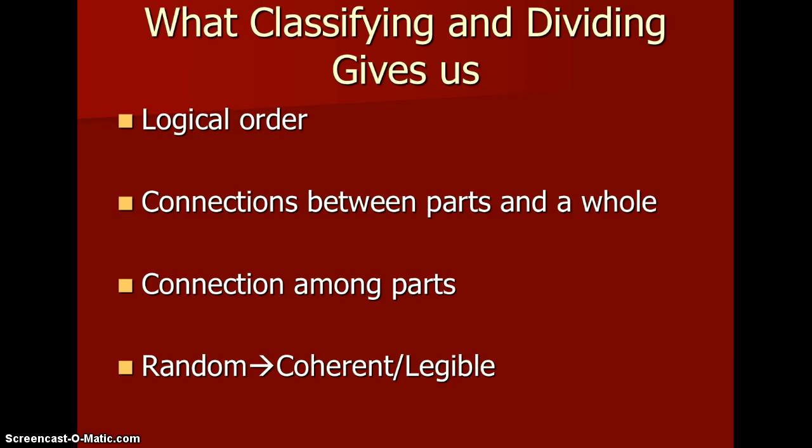When we look at information in terms of categories and sorting, we get logical order. Think if a grocery store just put things on the shelf in the order they came off the truck — you'd never be able to find anything. Classifying and dividing gives us connections between parts and a whole. If you think of alphabetizing documents, you know where you are within the alphabet. The different categories also give us connections between parts, and in general, doing this sort of thing — alphabetizing books, sorting shoes by color, breaking the grocery store down into departments — takes information that would otherwise be random and makes it coherent and legible so that we can think through it and think with it.